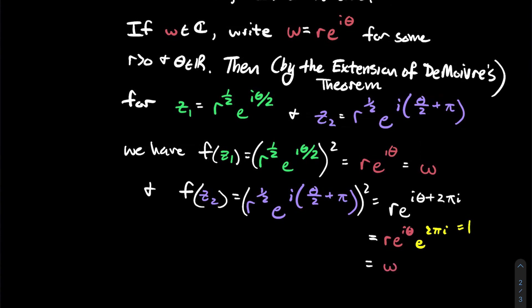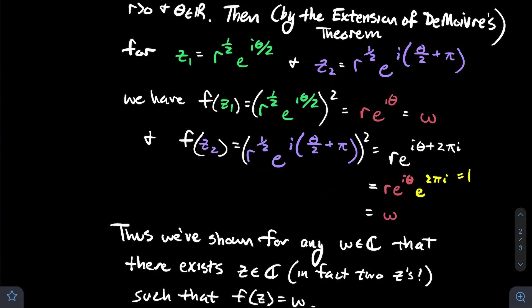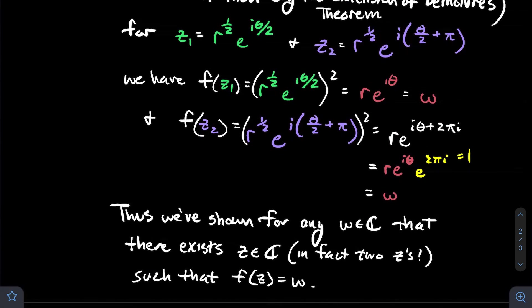So my point is, you're just left with r e to the i theta, which of course is w. And just to recap what we did, we've shown that for any complex number w, there exists a complex number z. In fact, we found two of them. We found z1 and z2 above, such that f of z equals w. And that's the definition of surjective.